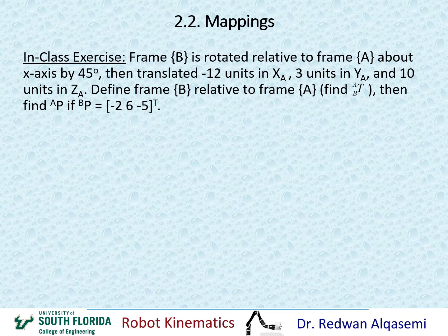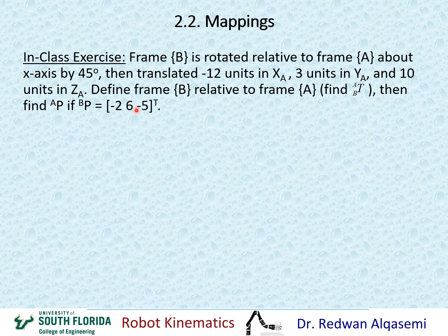Now let's take an in-class exercise for you to do on your own. Frame B is rotated relative to frame A about the X axis by 45 degrees, then translated negative 12 units in XA, 3 units in YA, and 10 units in ZA. Define frame B relative to frame A — find T of B relative to A — then find P relative to A if P relative to B equals [−2, 6, −5] transpose. Please pause the video and solve this, then resume to see the answer.